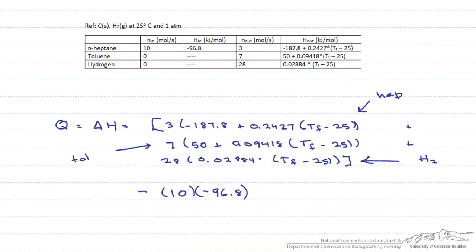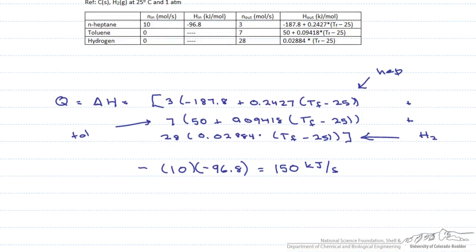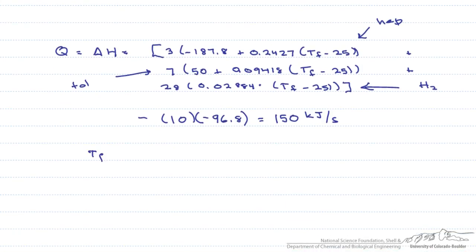This has to equal our Q, which is 150 kilowatts or 150 kilojoules per second. We then solve for our T final and we end up with 250 degrees C. So this is an example of how you would solve a problem when you are given the heat but you don't know what the outlet temperature is.